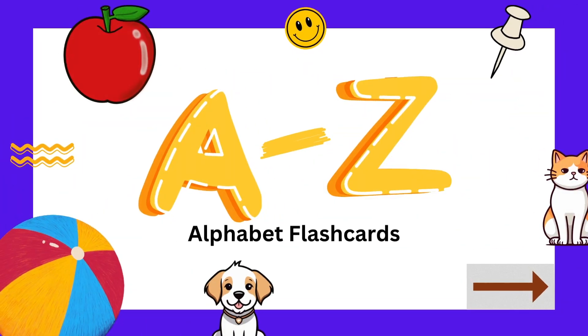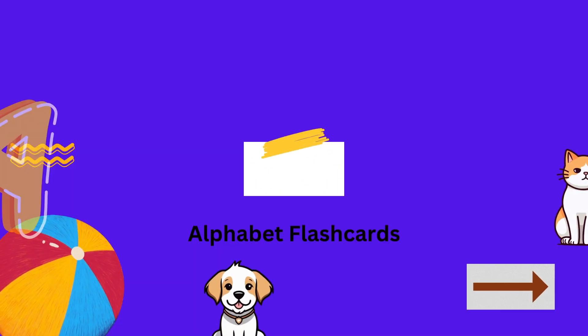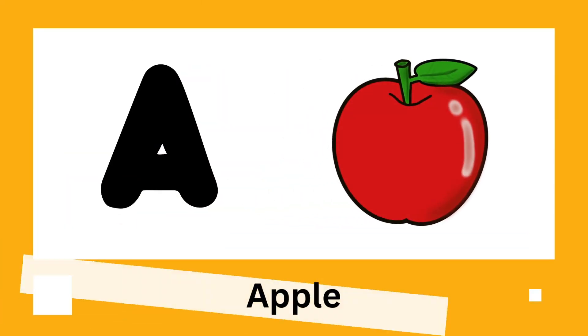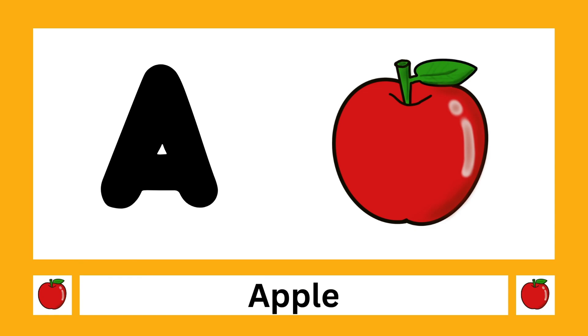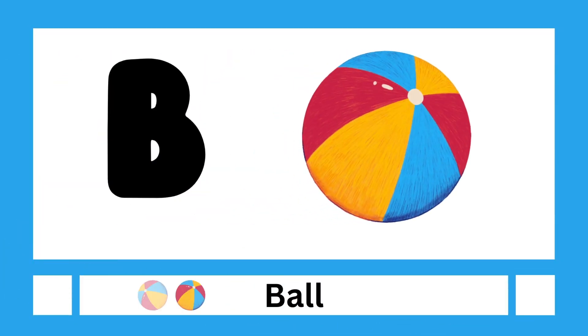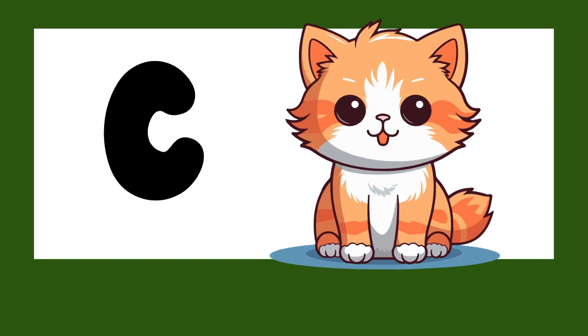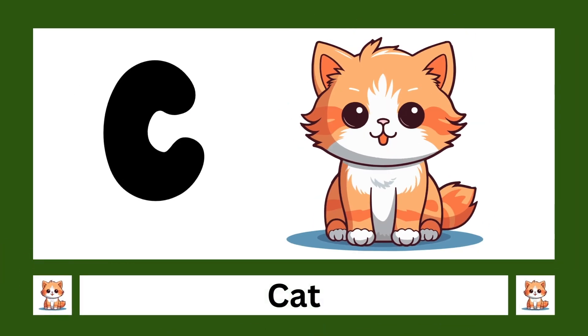Hello kids, today we learn A to Z alphabets. A is for apple, B is for ball, C is for cat.